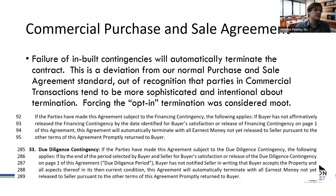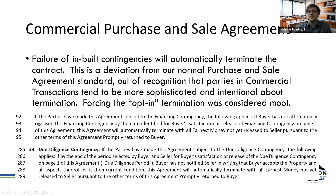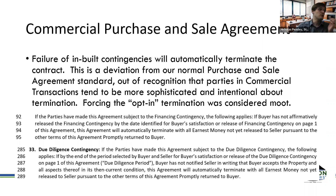The ball is in the buyer's court — the buyer chooses whether the contract continues based on their satisfaction with the rights they've given themselves. For example, if the agreement is contingent on the financing contingency and the buyer has not affirmatively released it using form 2.14 (Release of Contingencies), the contract will automatically terminate. The commercial PSA flips the normal process of the residential PSA on its head in this respect.